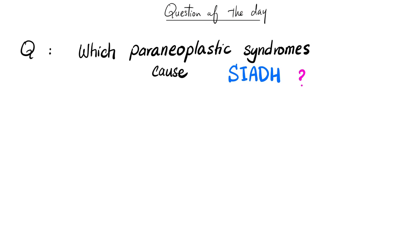Another question for you: which paraneoplastic syndromes — cancers that secrete — cause syndrome of inappropriate ADH? Can you enumerate three, five, or seven cancers? All of these can lead to increased ADH and therefore higher urine osmolality. Please answer in the comment section.